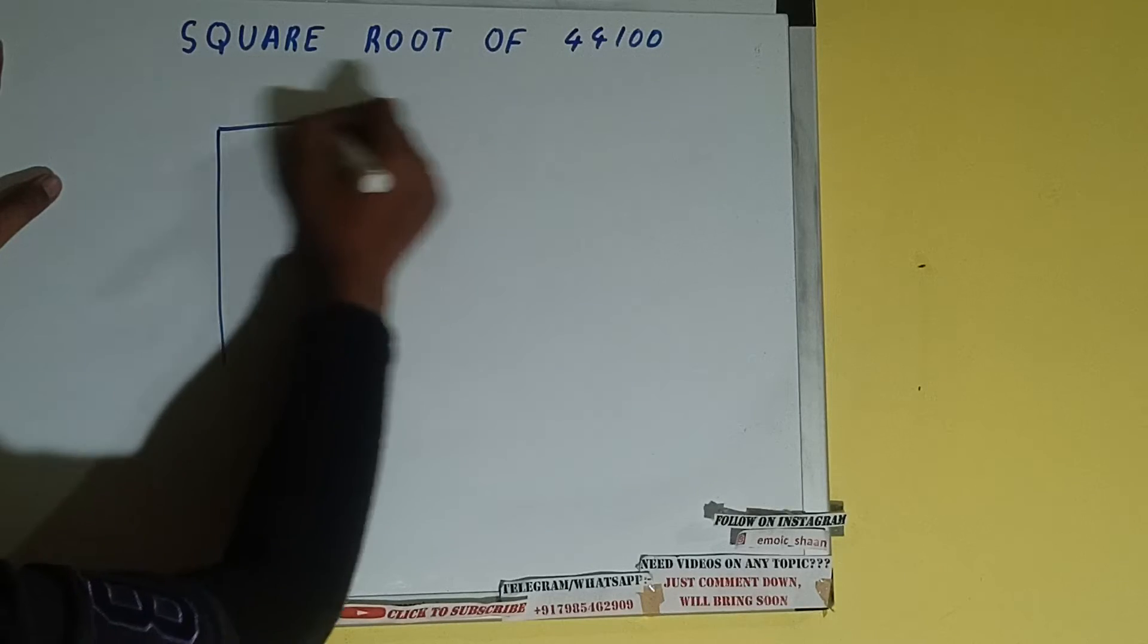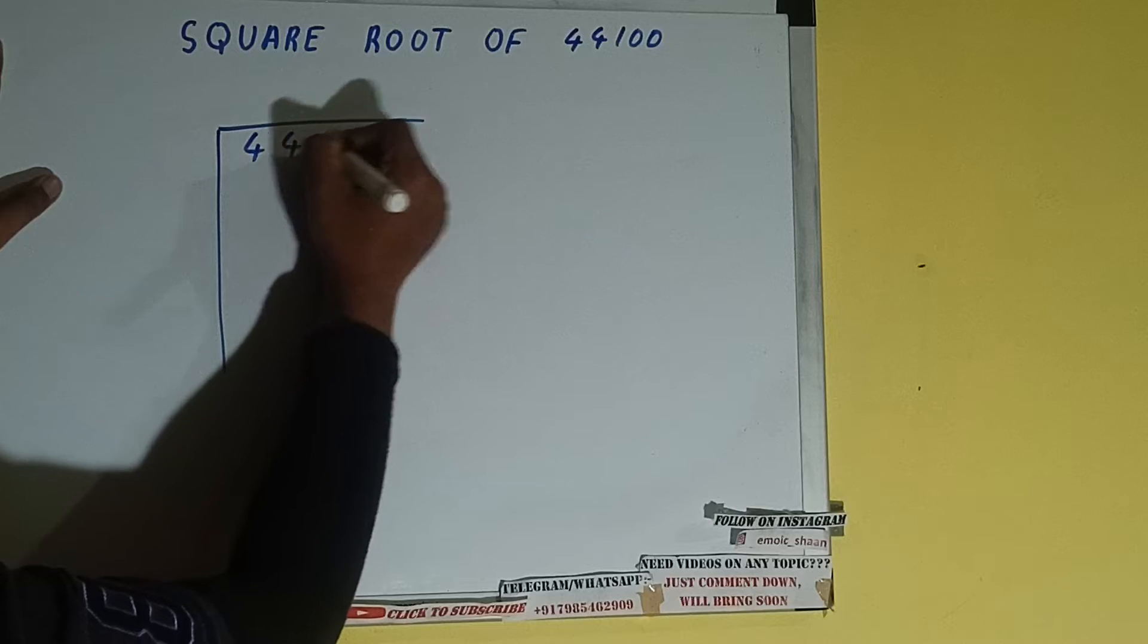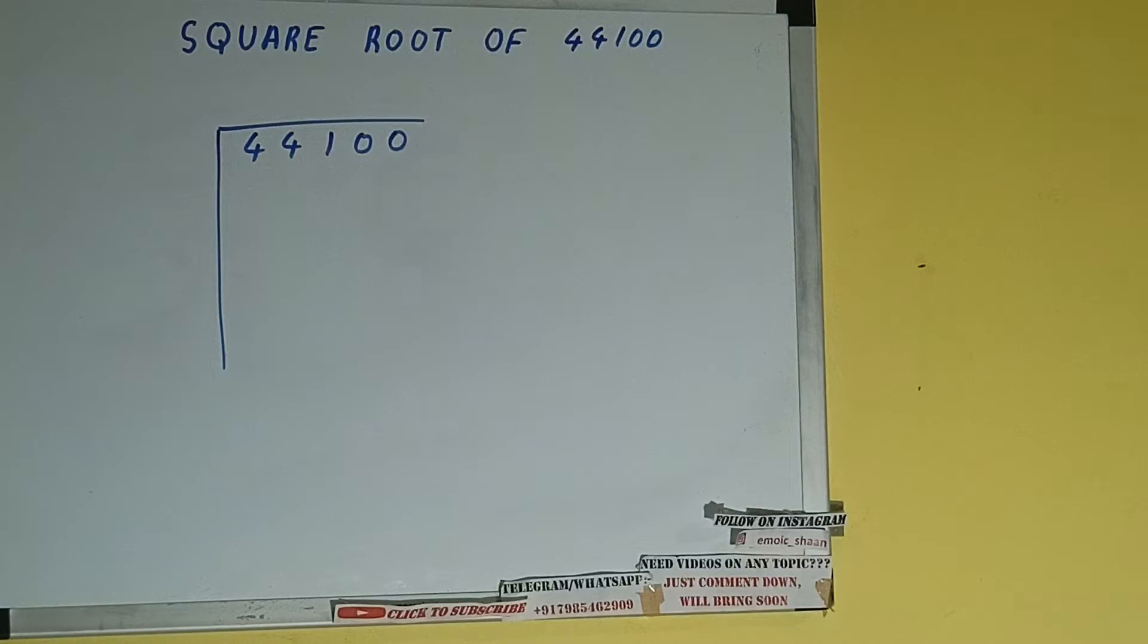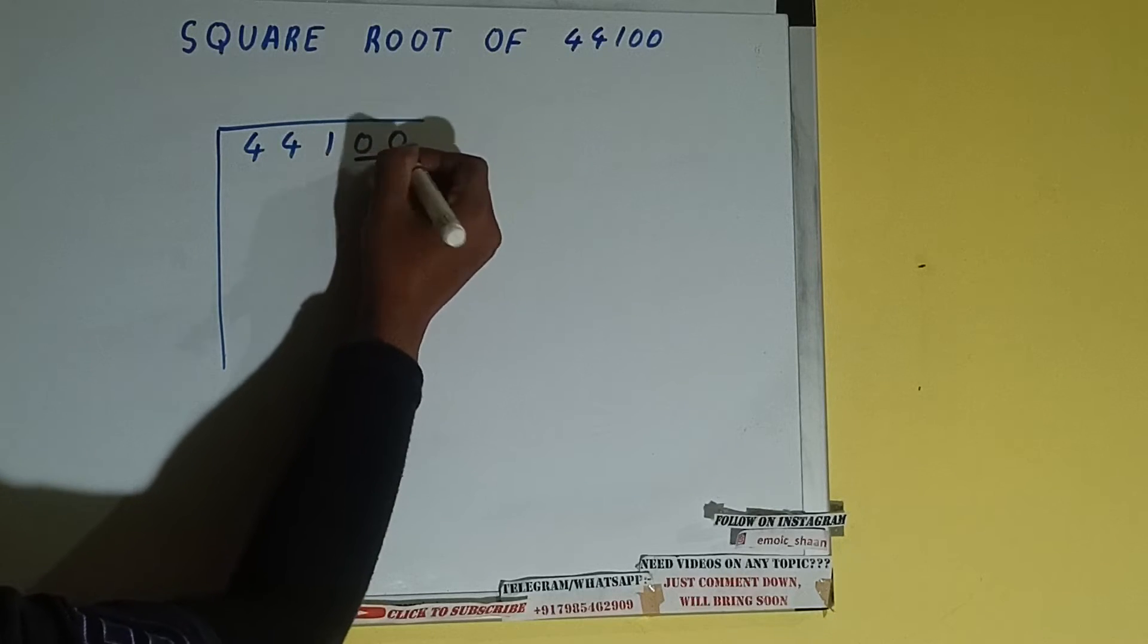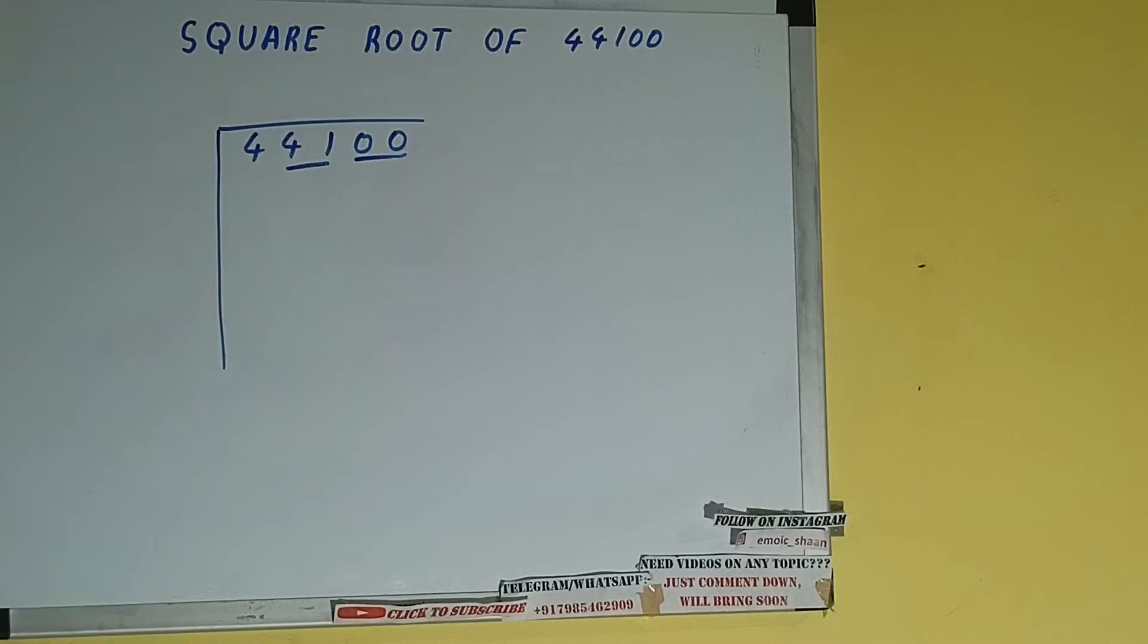First of all we need to write the number like this 44100. Next thing we need to do is form pairs from the right hand side. So one pair will be this, one pair will be this, and this four will be left out.